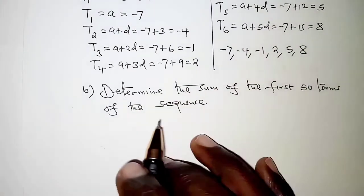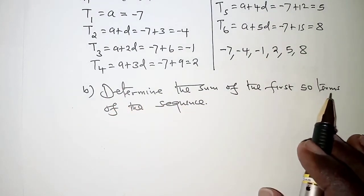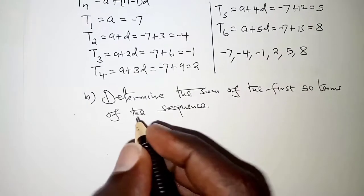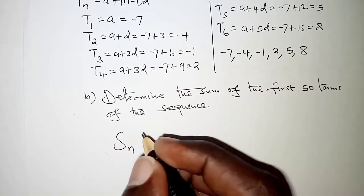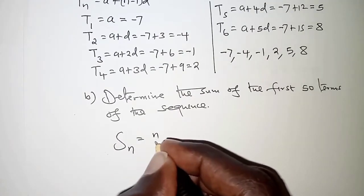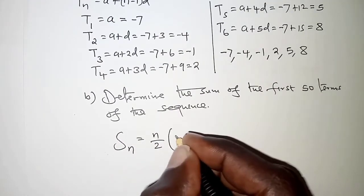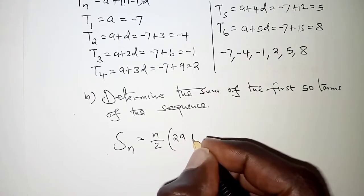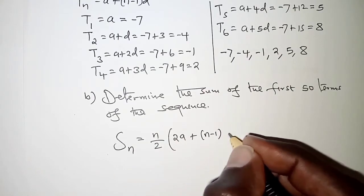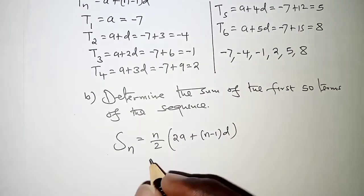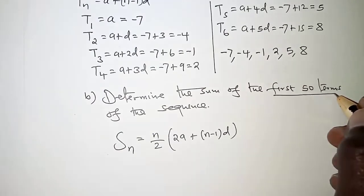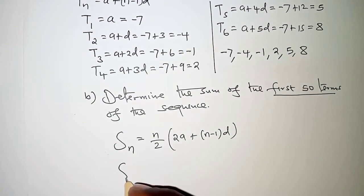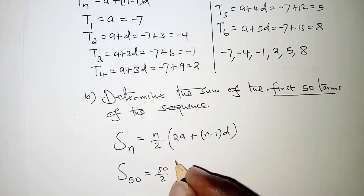Now to the next part, we are asked to determine the sum of the first 50 terms of the sequence. For an arithmetic progression, the sum of the first n terms is given as n over 2 times 2a plus n minus 1 times d. For this case, n is 50, so we have 50 over 2.